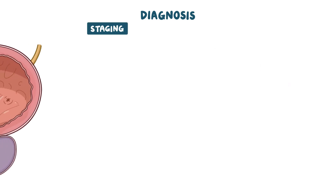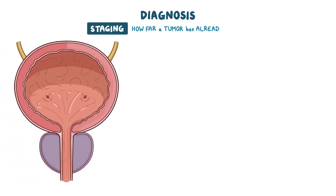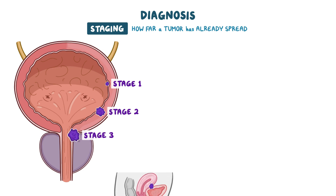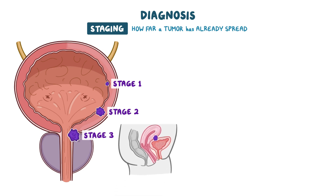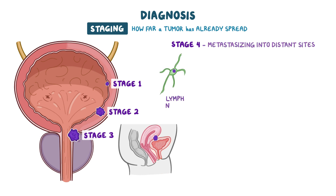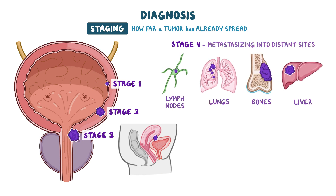Staging is determined based on how far the tumor has spread. A stage one tumor is localized to the bladder mucosa. At stage two, it has invaded the bladder wall. At stage three, it has spread to surrounding tissues and organs such as the prostate and uterus. Stage four is when it has metastasized to distant sites such as the lymph nodes, lungs, bone, or liver.